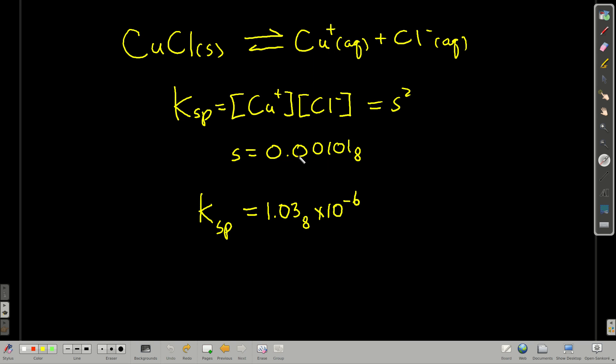So to find Ksp, we just take the concentration of copper 1 we found, square it, there we go, we have Ksp.